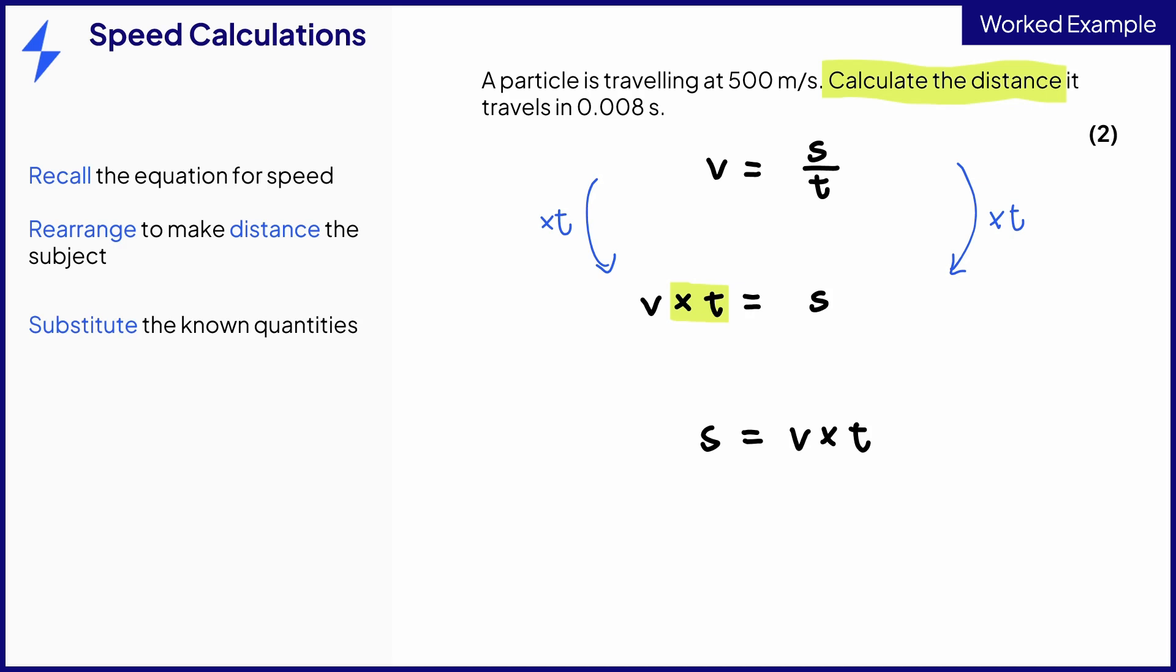All that is left to do is substitute v and t for 500 and 0.008 respectively for a mark. We type this into a calculator and the answer is 4 meters, which gains the second mark.